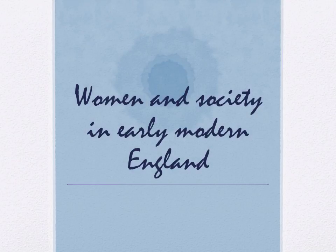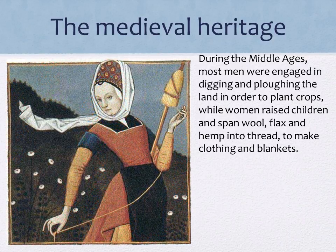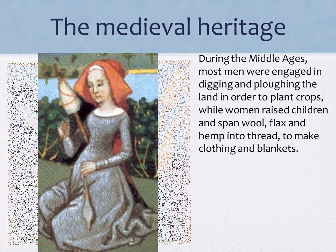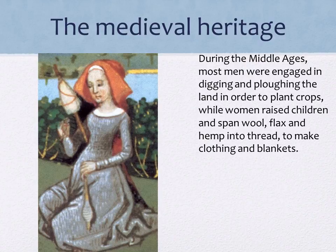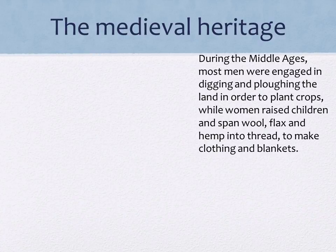The subject is women and literature and society in the early modern period. I'd like to begin with background going back to the Middle Ages, at a time when basically, if you were a man — unless you were very high class — you were probably going to be digging land or planting crops. If you were a woman, you were probably going to be raising children and spinning. And these pictures of women were the most common depiction of women.